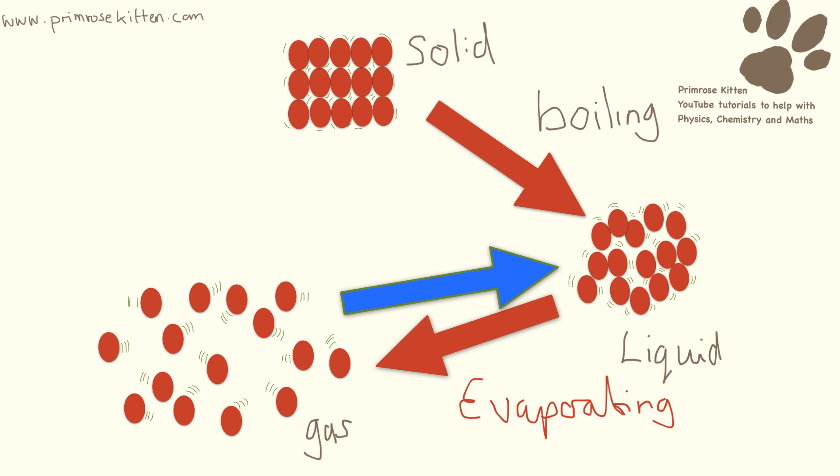A gas to a liquid is condensing. A liquid to a solid is freezing. And the last one, which you don't need to know for your GCSE but it's interesting: when you go from a solid to a gas, it is subliming.